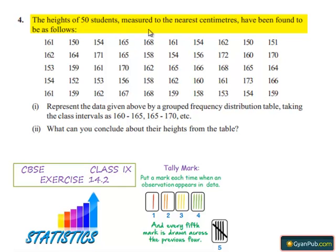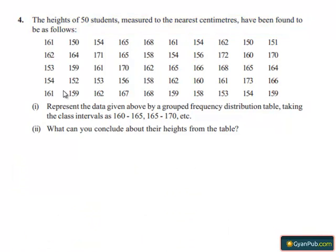Heights of 50 students measured to the nearest centimeters have been found to be as follows. First, we represent the given data above by a grouped frequency distribution table, taking the class intervals as 160 to 165, 165 to 170, etc. Let's move on with the solution.